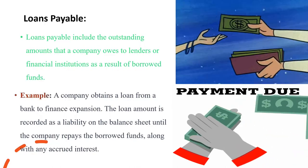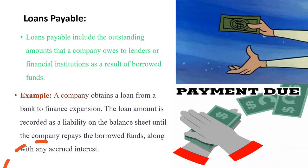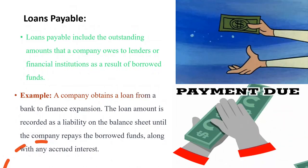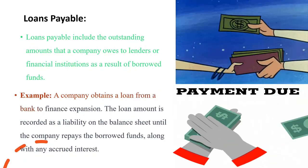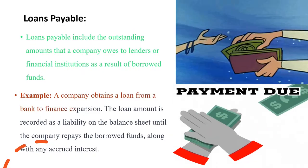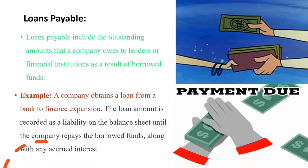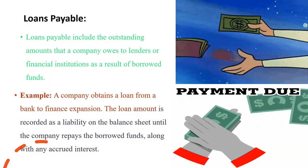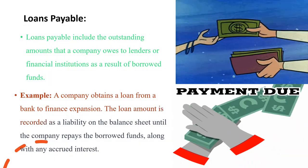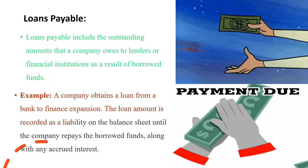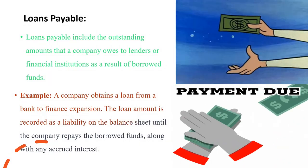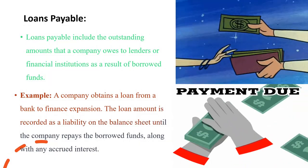Example. A company obtains a loan from a bank to finance expansion. The loan amount is recorded as a liability on the balance sheet until the company repays the borrowed funds, along with any accrued interest.